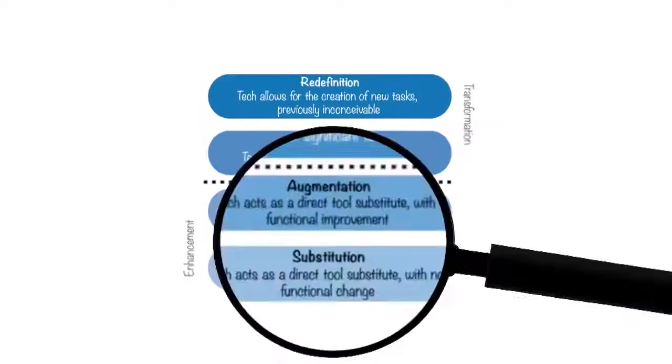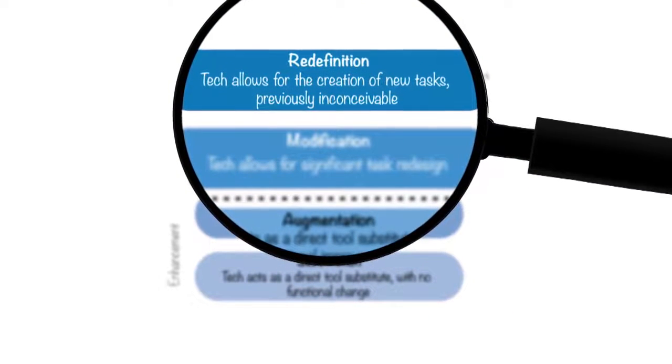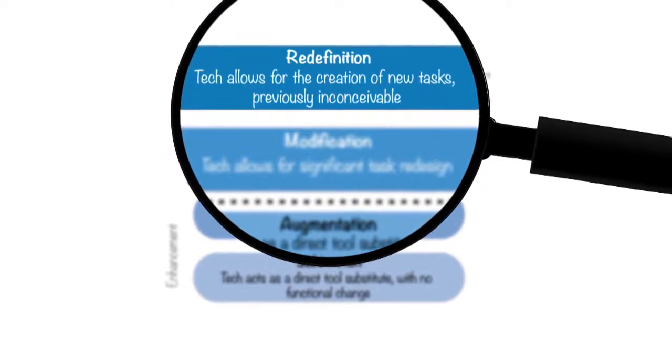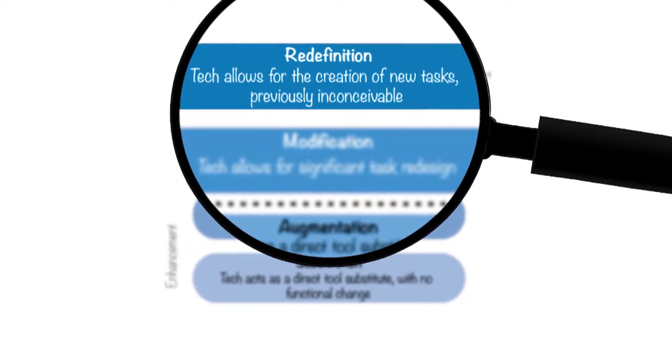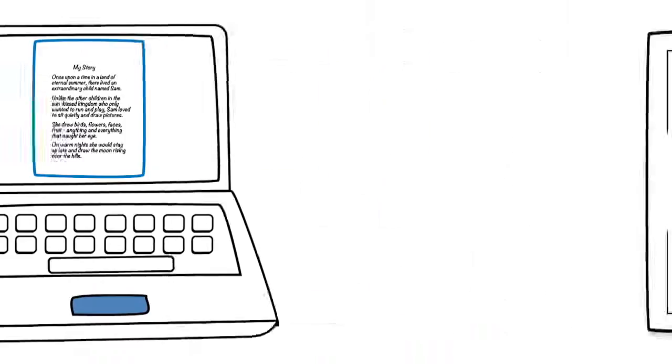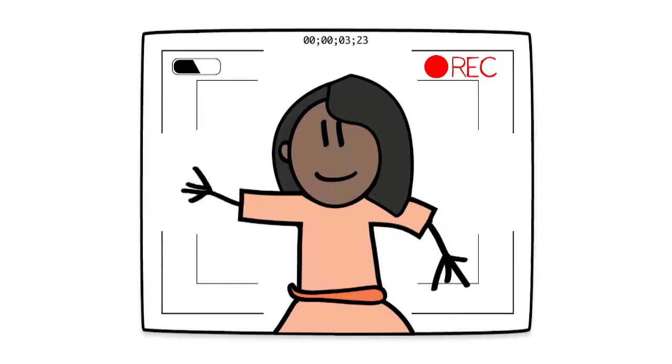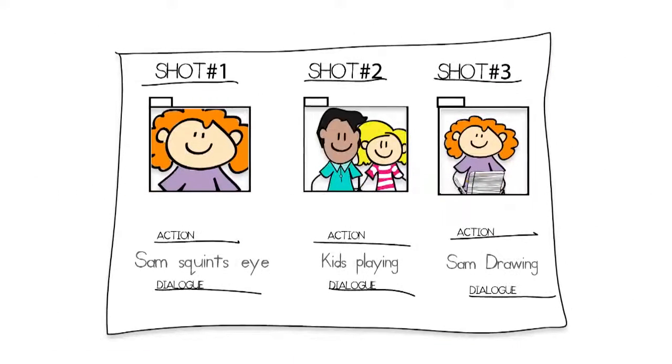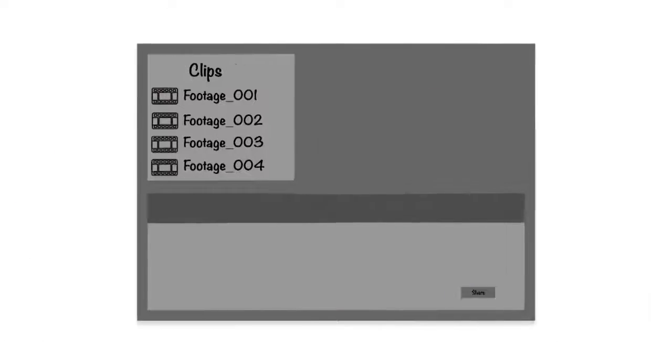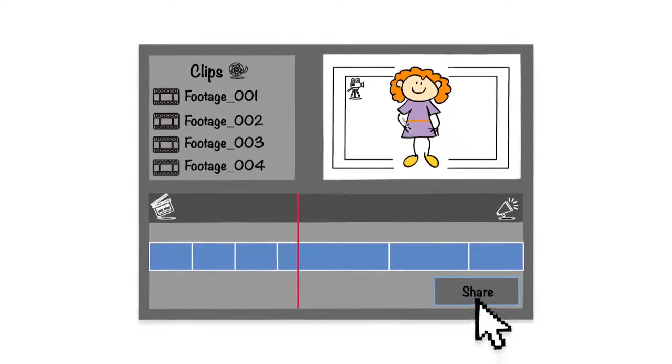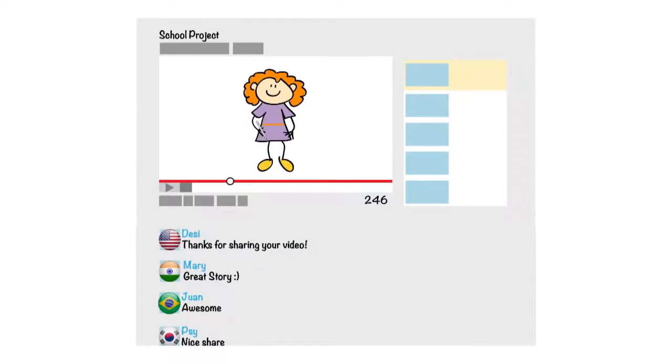At the top stage, redefinition, technology allows for the creation of entirely new tasks that were previously inconceivable. What if students transform their written stories into multimedia productions? After creating storyboards, students film scenes, edit clips, and add music. They can publish the videos and receive feedback from voices across the globe.